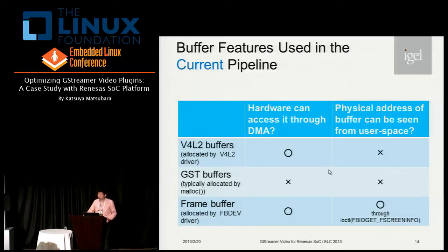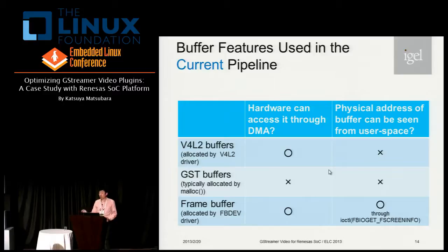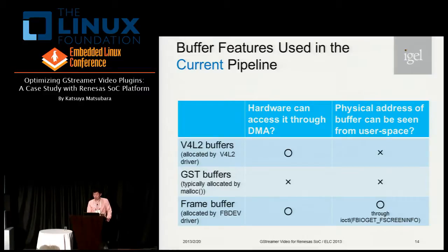To find a solution, let's focus on buffer management. The current pipeline uses three types of buffers. The V4L2 buffer can be allocated by the V4L2 kernel driver — hardware devices can access V4L2 buffers because they are usually assigned to DMA-able memory, but the driver provides only corresponding virtual addresses of buffers to user space. GStreamer buffers are typically allocated by malloc in user space, so hardware cannot access them directly, and the user space programmer never knows the physical address of the buffer. The frame buffer can be accessed by hardware naturally, and the physical address of the frame buffer can be obtained from user space through an ioctl to the frame buffer device.